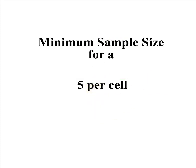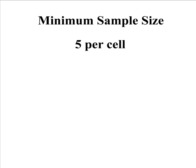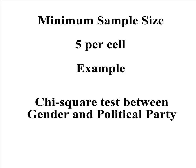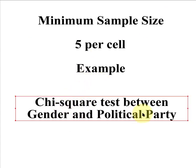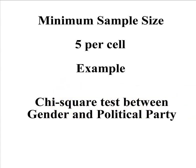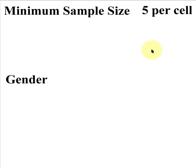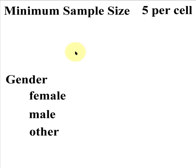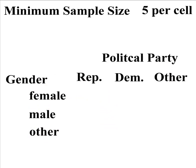Let me explain what that means with an example. Let's pretend we're going to run a chi-squared test between two nominal categorical variables. One is gender and one is political party. With gender, we'll list out the levels or subgroups: female, male, and other. With political party, we'll also pick three — the big ones: Republican, Democrat, and other.